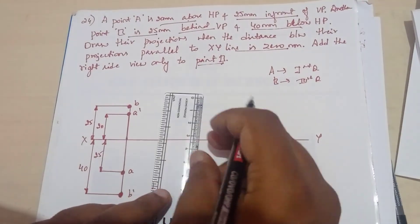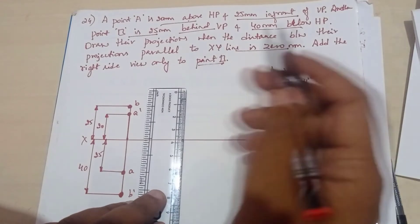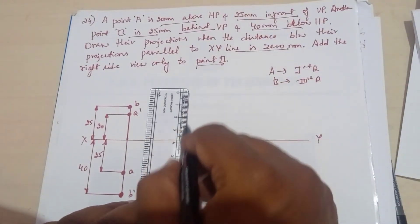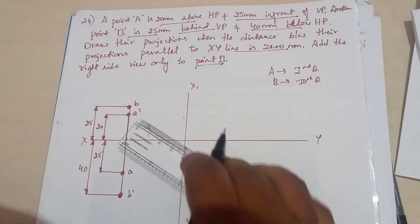Now we have to draw the right side view only for point B. That is right side view means RPP we should consider here. So I will be drawing X1, Y1 only for the point B here, okay.